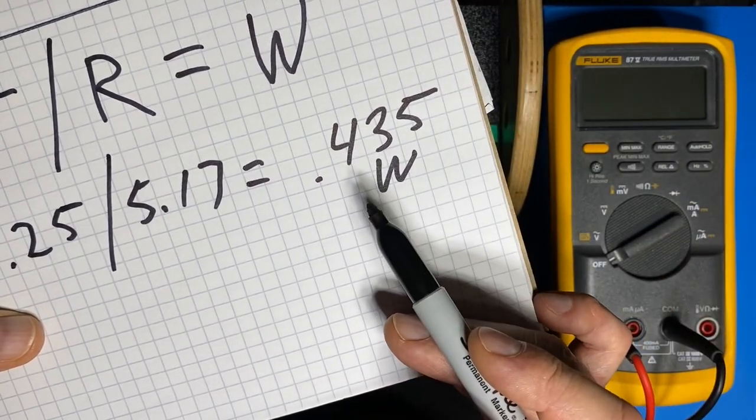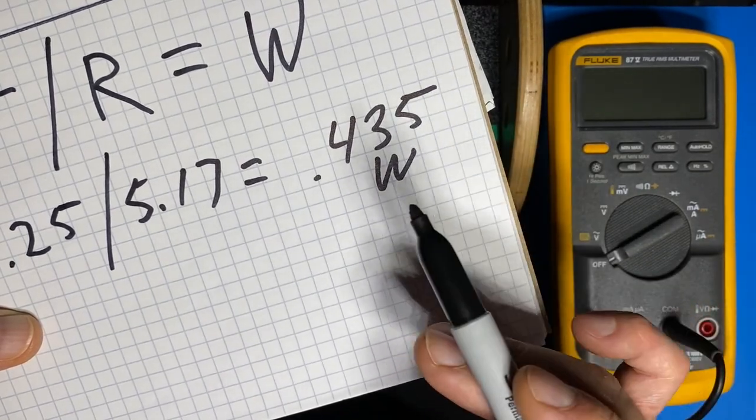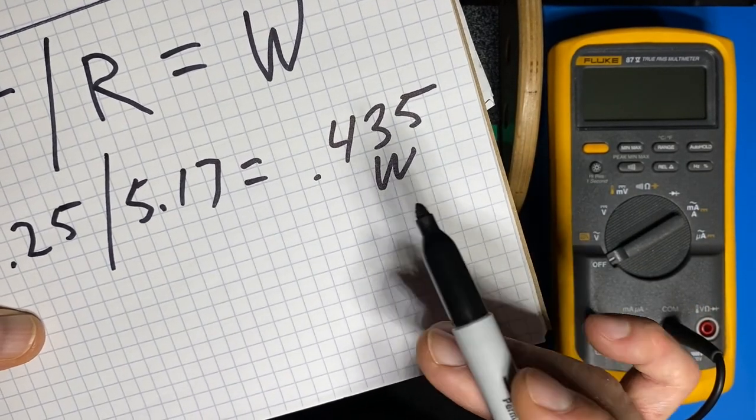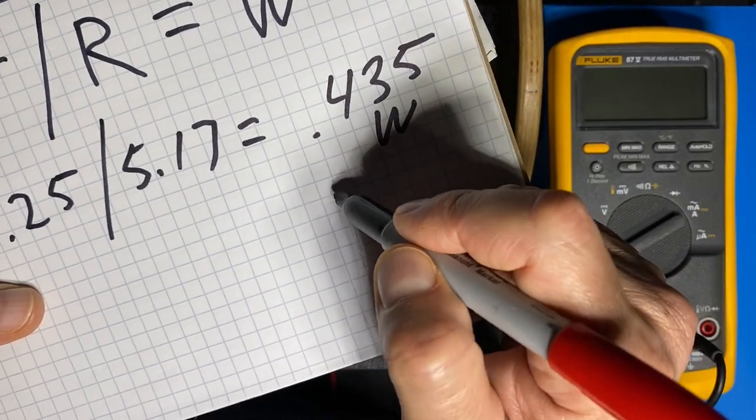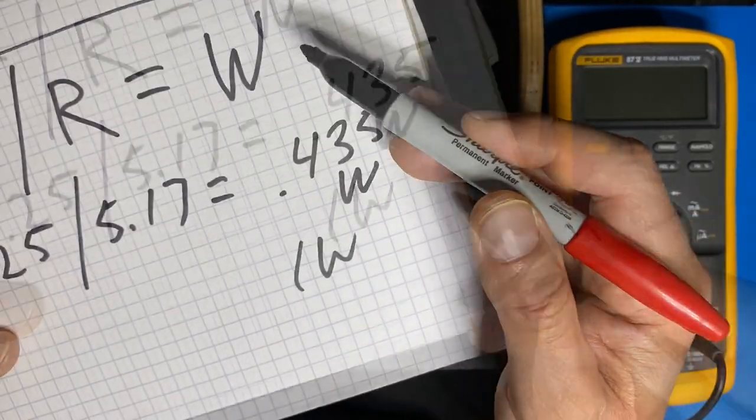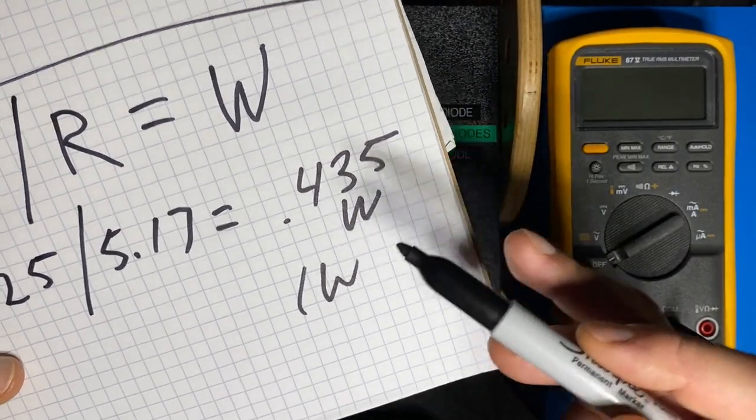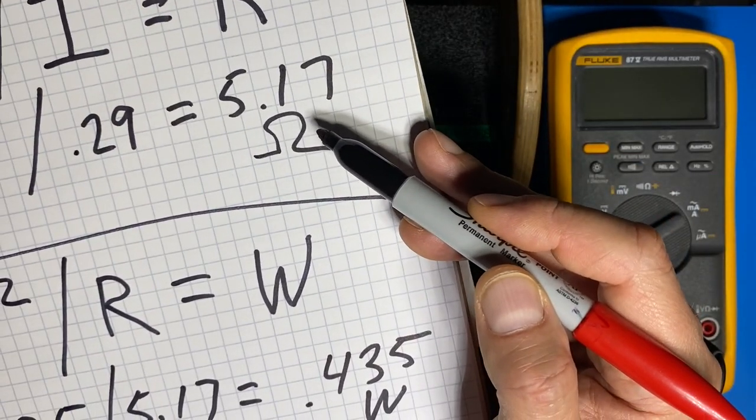Now for an extra margin of safety it's always a good idea to make sure that your resistor is capable of 200% of the needed wattage. So we should really have at least a one watt resistor. So let me see what I have for a resistor that's at least 1 watt and about 5.17 ohms.